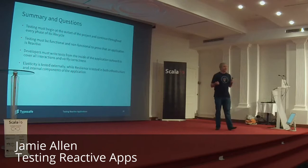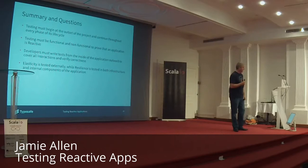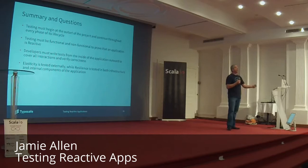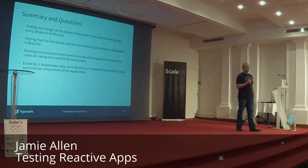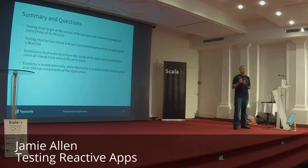So, summary. Testing must begin at the beginning and it must work from the inside out — that reverse onion pattern. Testing must be functional and non-functional. It can't just be making sure that my code gives me the right responses — it also has to deal with the various infrastructure barriers we can have. And elasticity is also tested externally. We want to make sure that the way we're scaling across our boxes up and down is being proven, so that we're not wasting resources. And that's it.